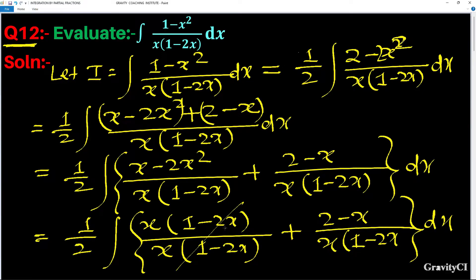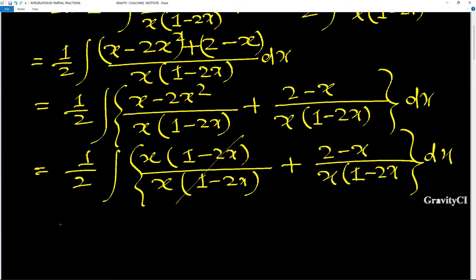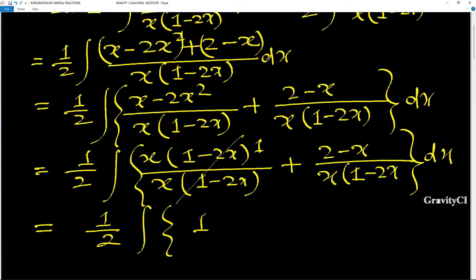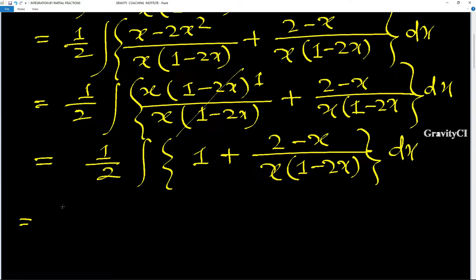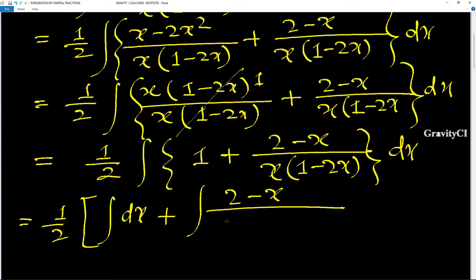The (1 minus 2x) terms cancel out. We separate the terms, so this becomes integration dx plus integration of (2 minus x) upon x into (1 minus 2x) dx.